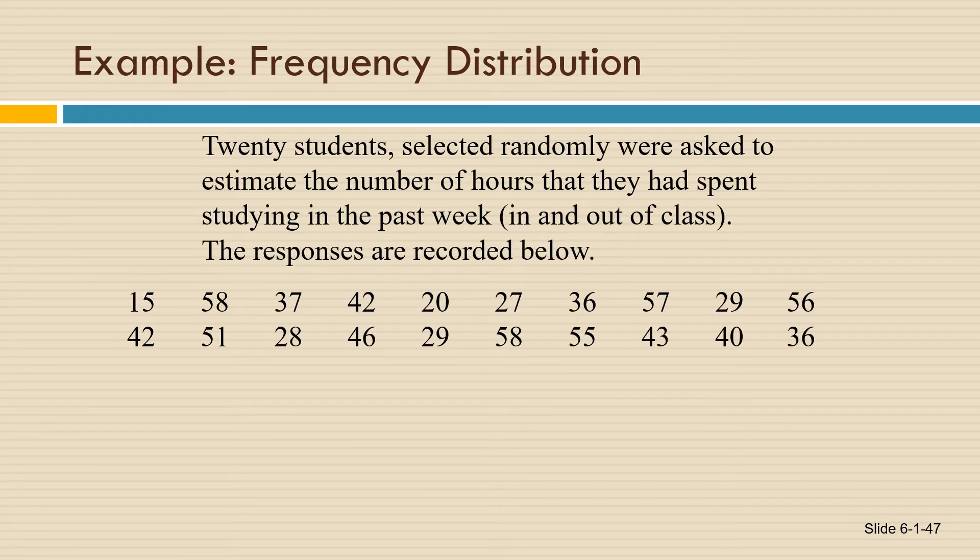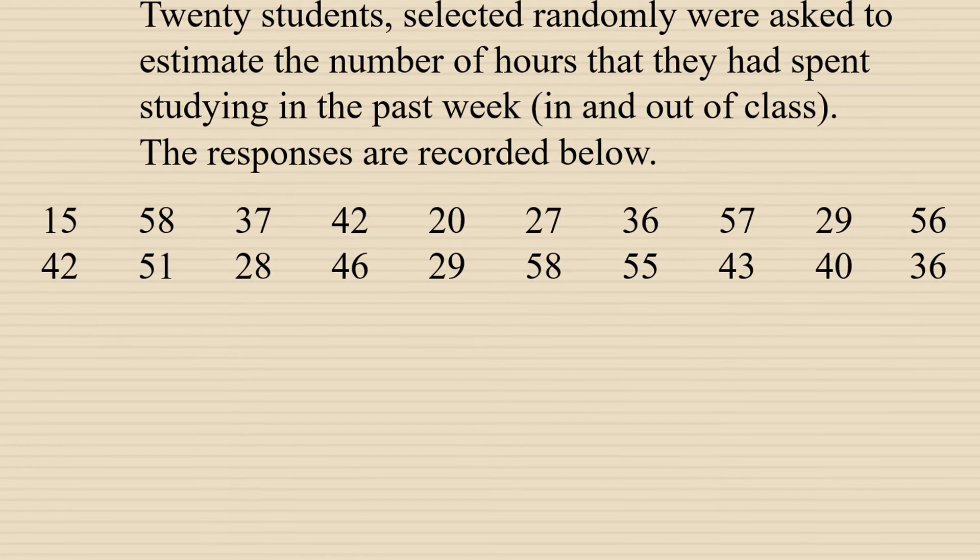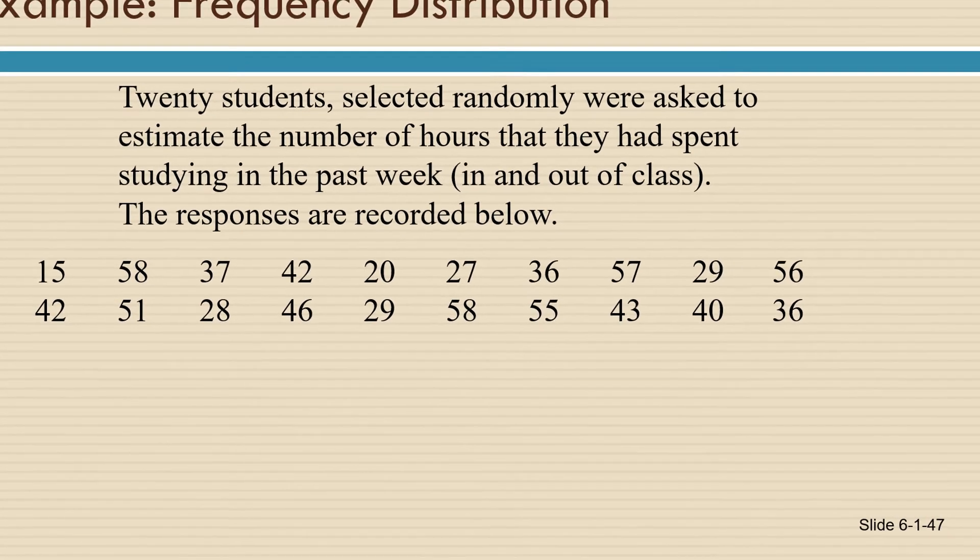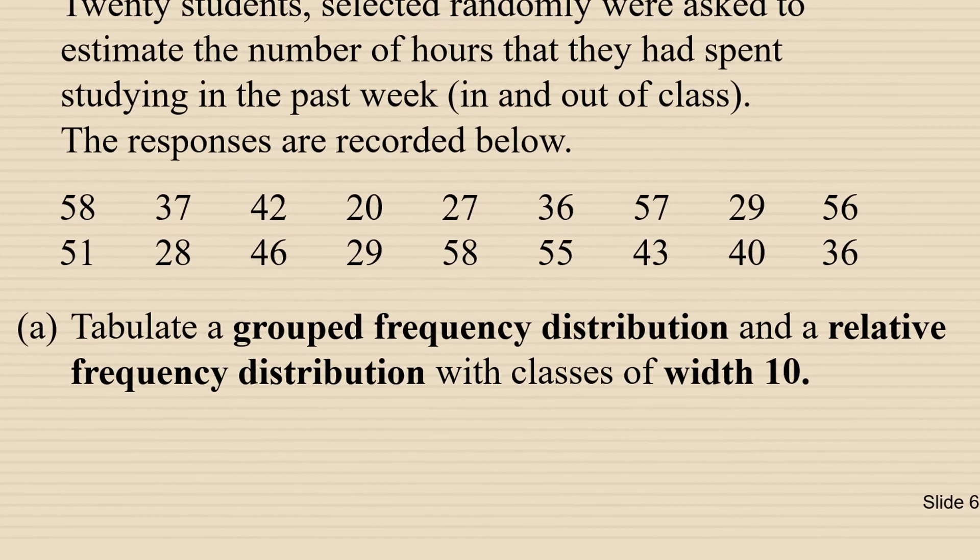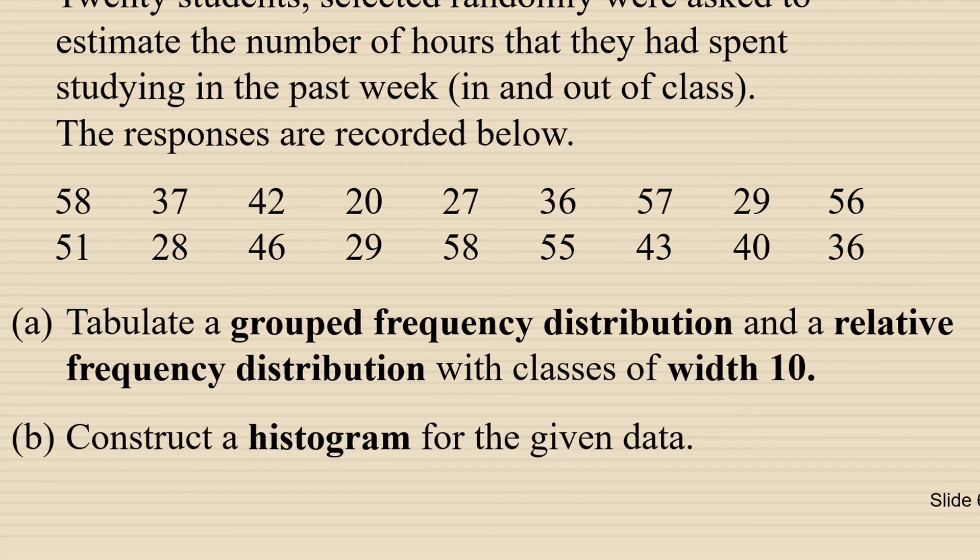So here's an example of how you might be asked to set up a grouped frequency distribution. It says 20 students selected randomly were asked to estimate the number of hours that they had spent studying in the past week. The responses are recorded below. So this is the raw data. Tabulate a grouped frequency distribution and a relative frequency distribution with classes of width 10. Construct a histogram for the given data.